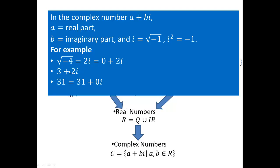3 plus 2i is an example of a complex number that is not a real number. 31 is a real number — and is it a complex number? Yes, because you can write it as 31 plus 0i. So if you have a 0 imaginary part, then all real numbers are complex numbers.